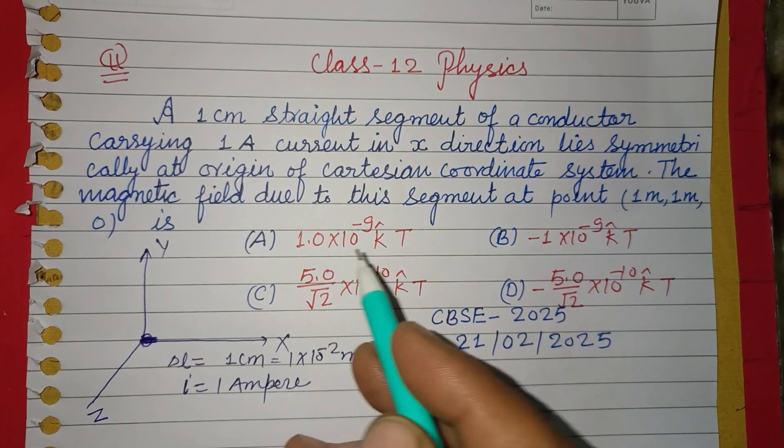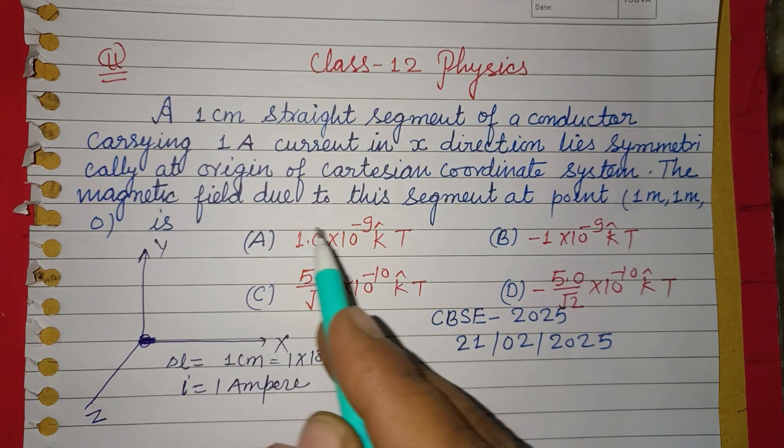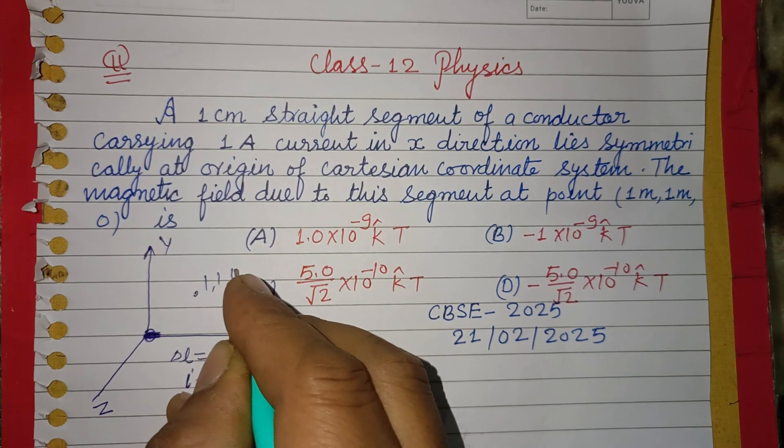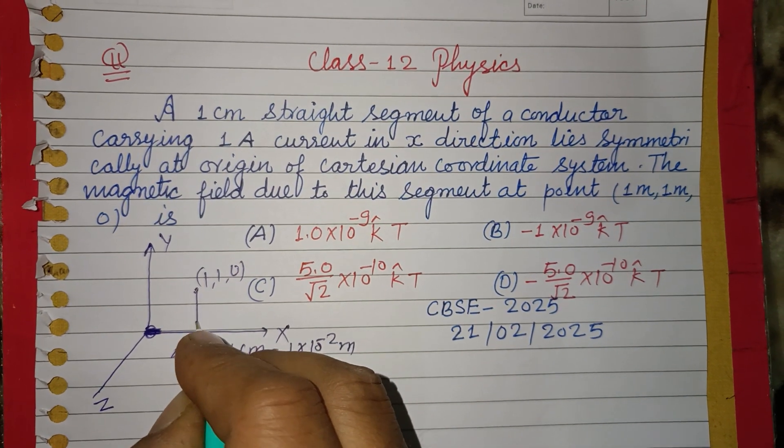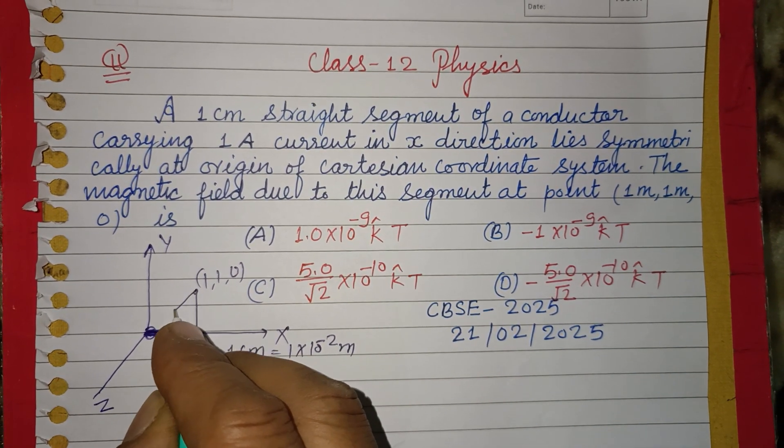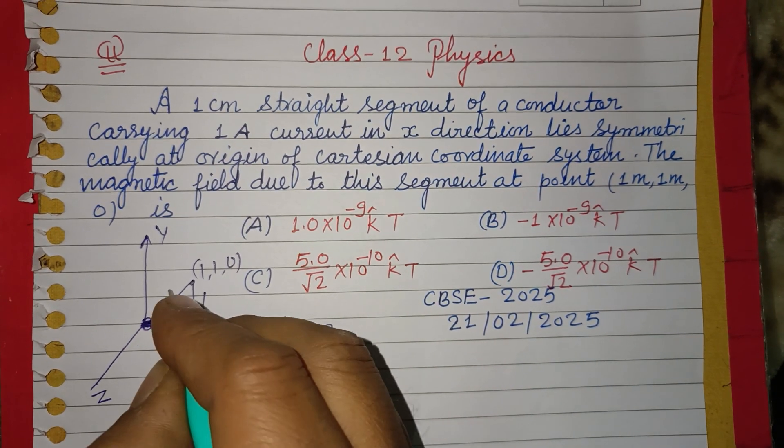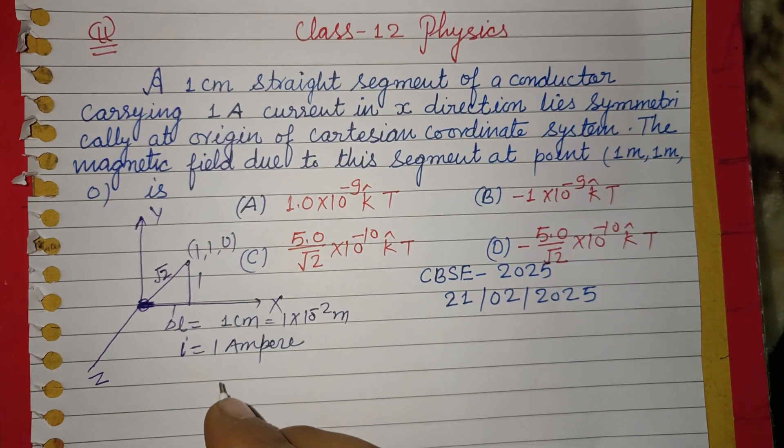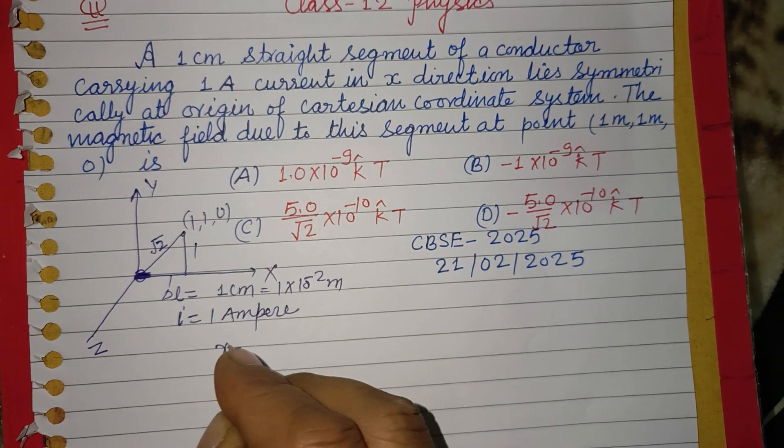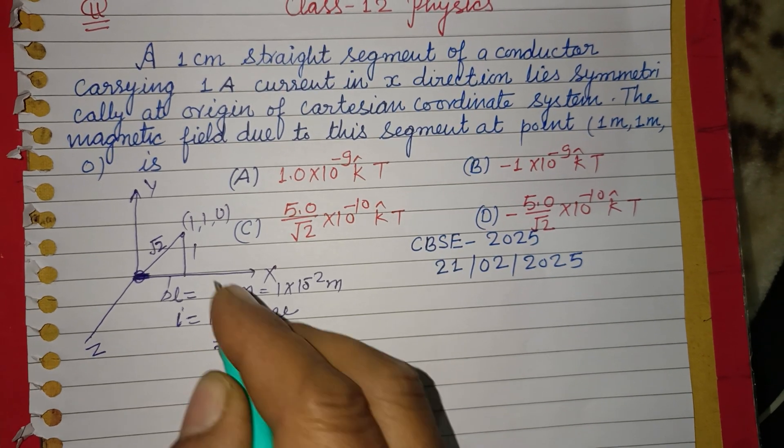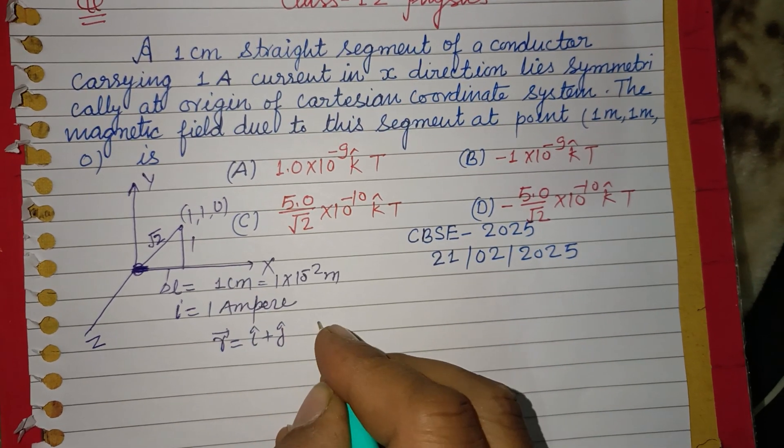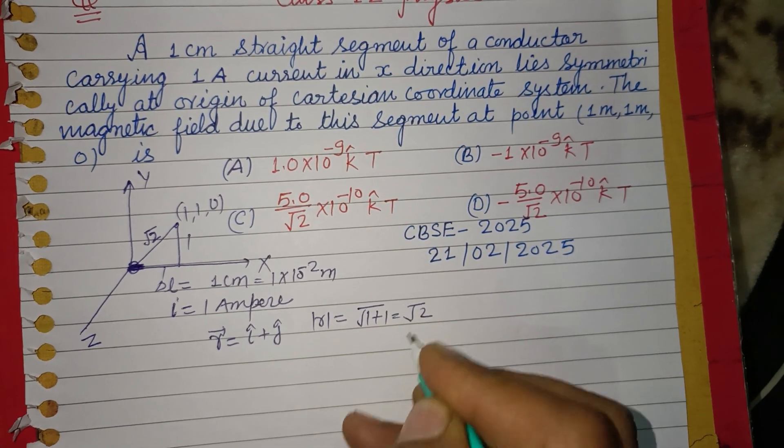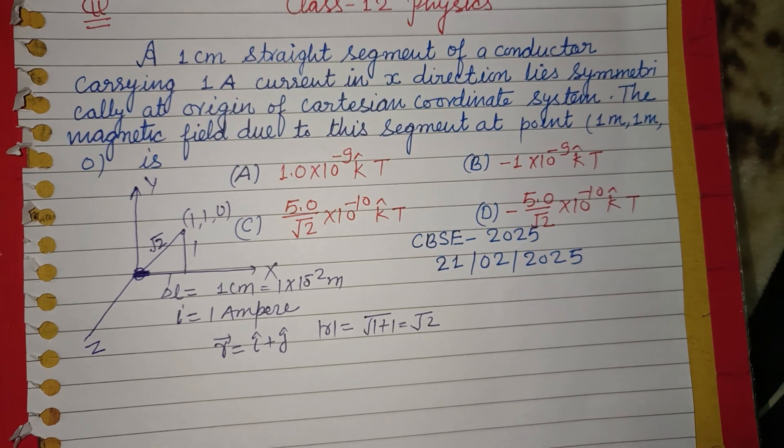The magnetic field at point (1,1,0) - we draw perpendicular on this. This is 1, this is 1, then this distance is √2. We write r = i cap + j cap, or |r| = √(1+1) = √2.